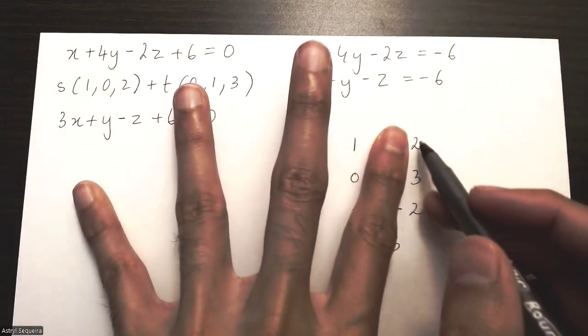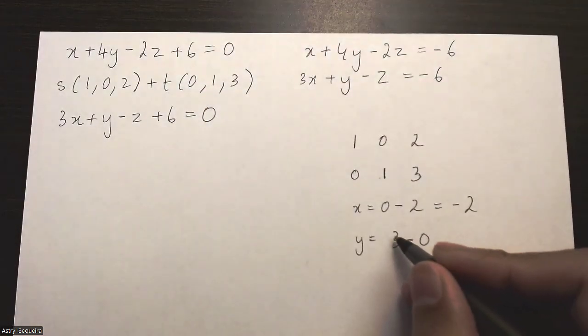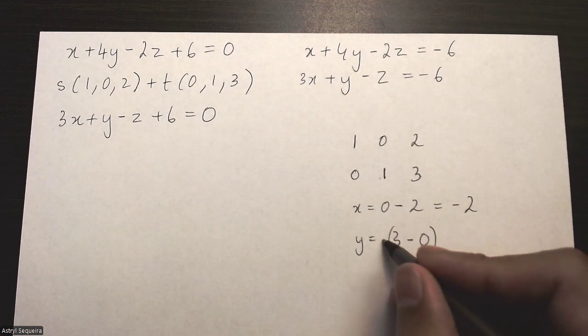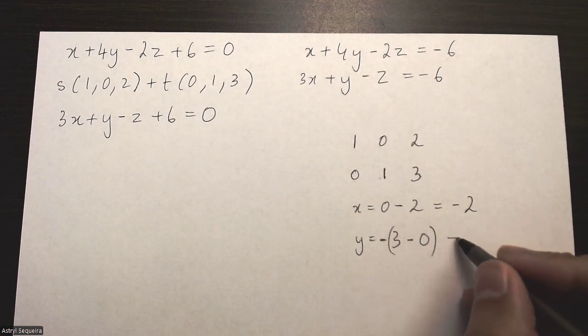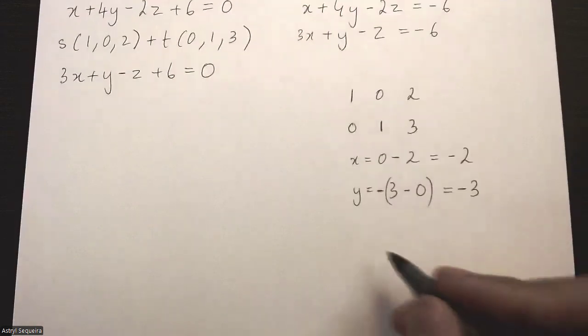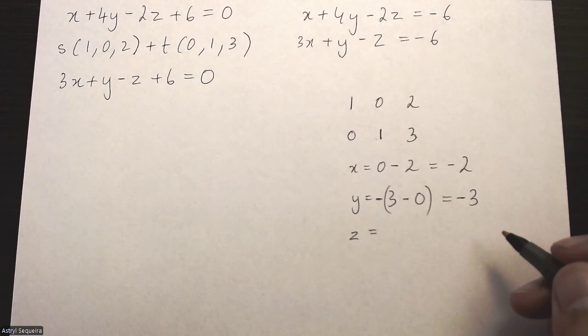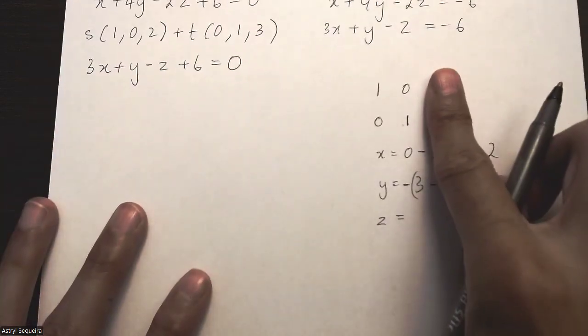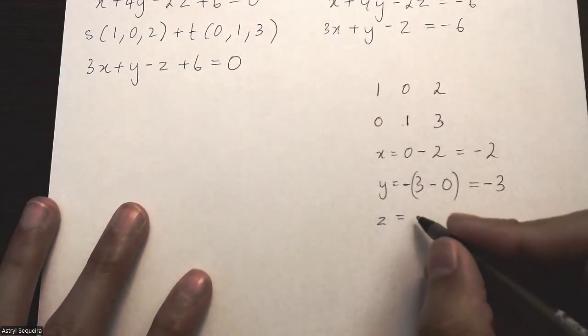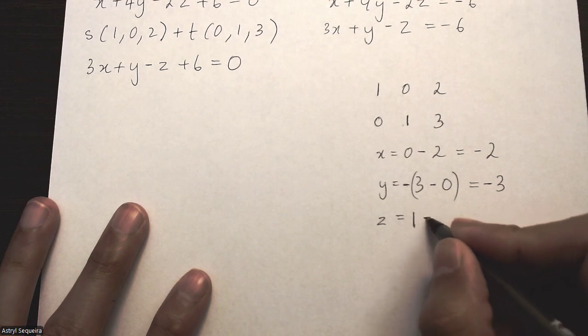...which is 3 minus 2 times 0 which is 0, and then you want to make the whole thing a negative just for the y coordinate. It's going to be negative 3. Then my z coordinate is just hide the third column, so I have 1 times 1 which is 1 minus 0 times 0 which is 0.